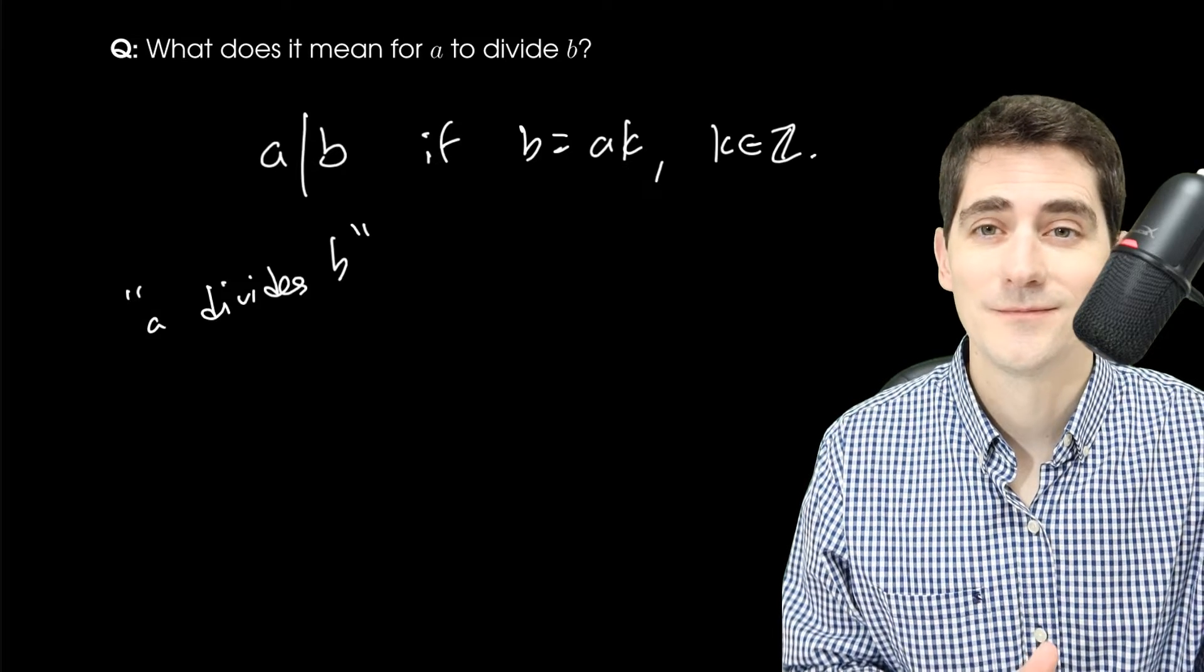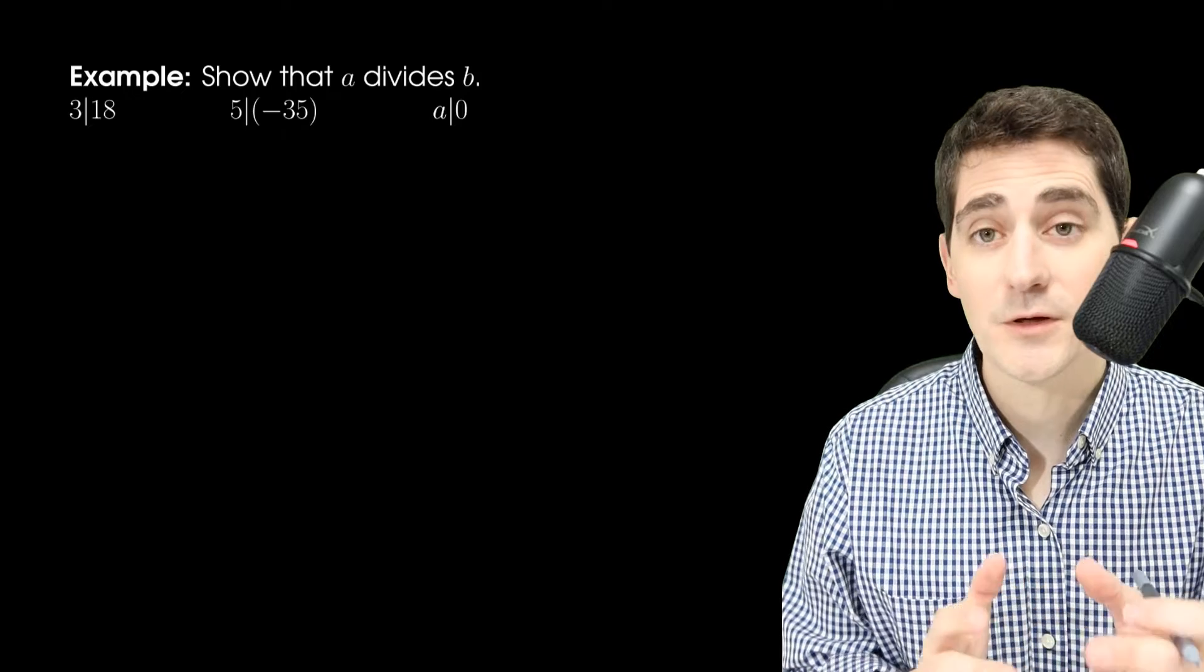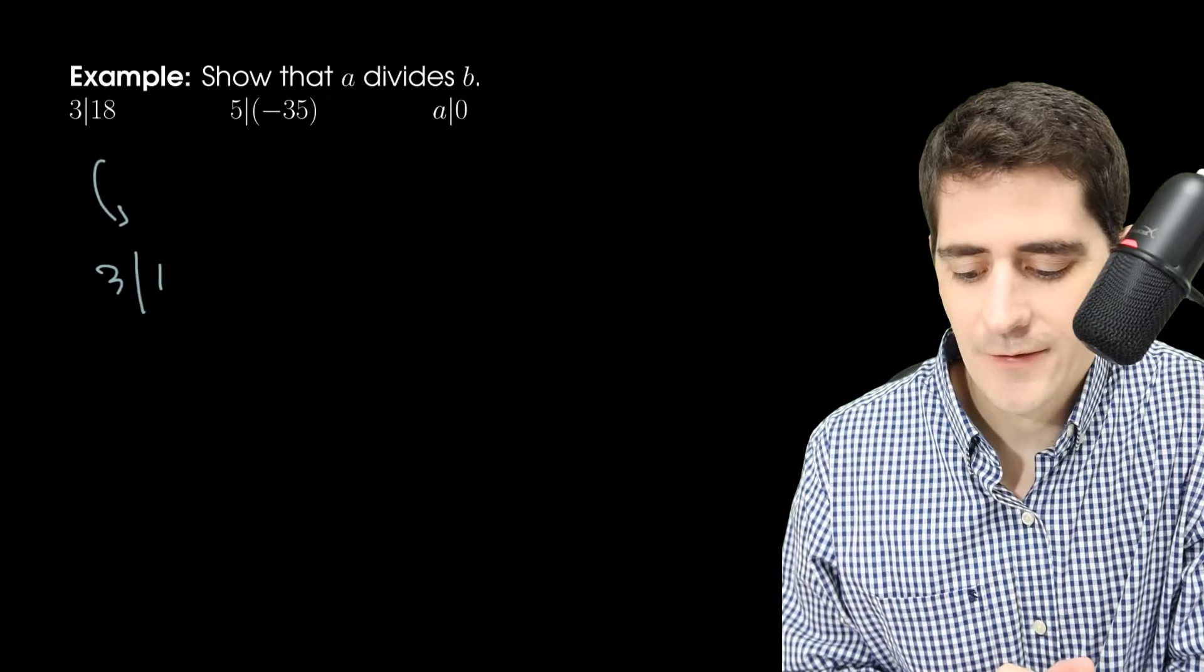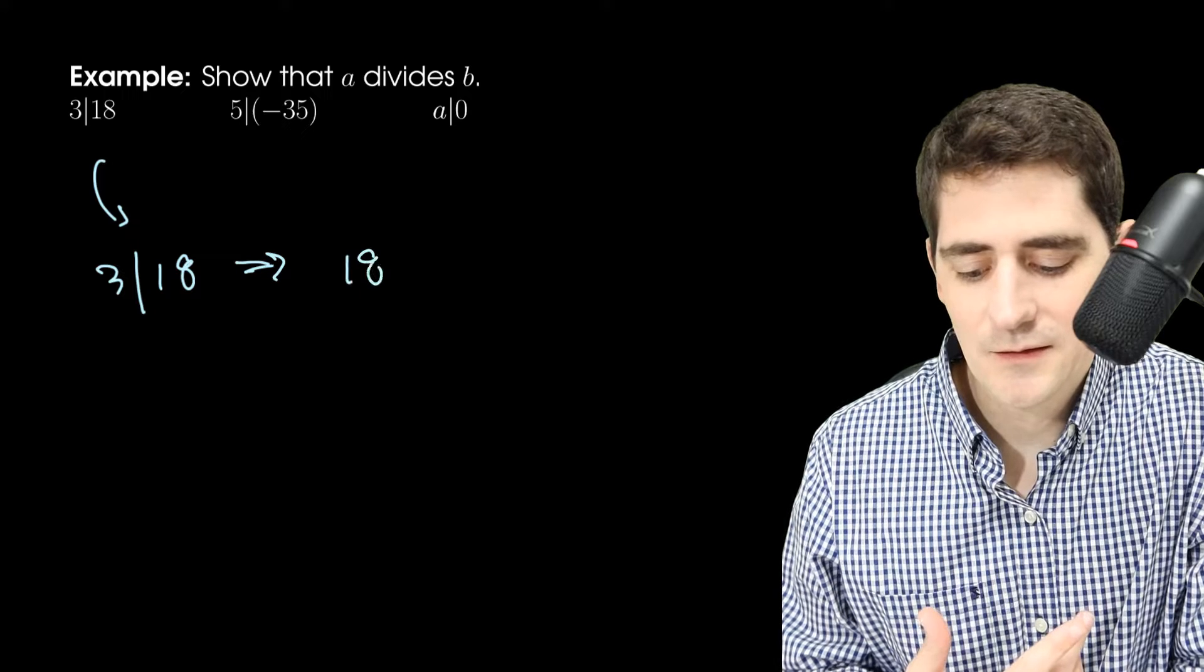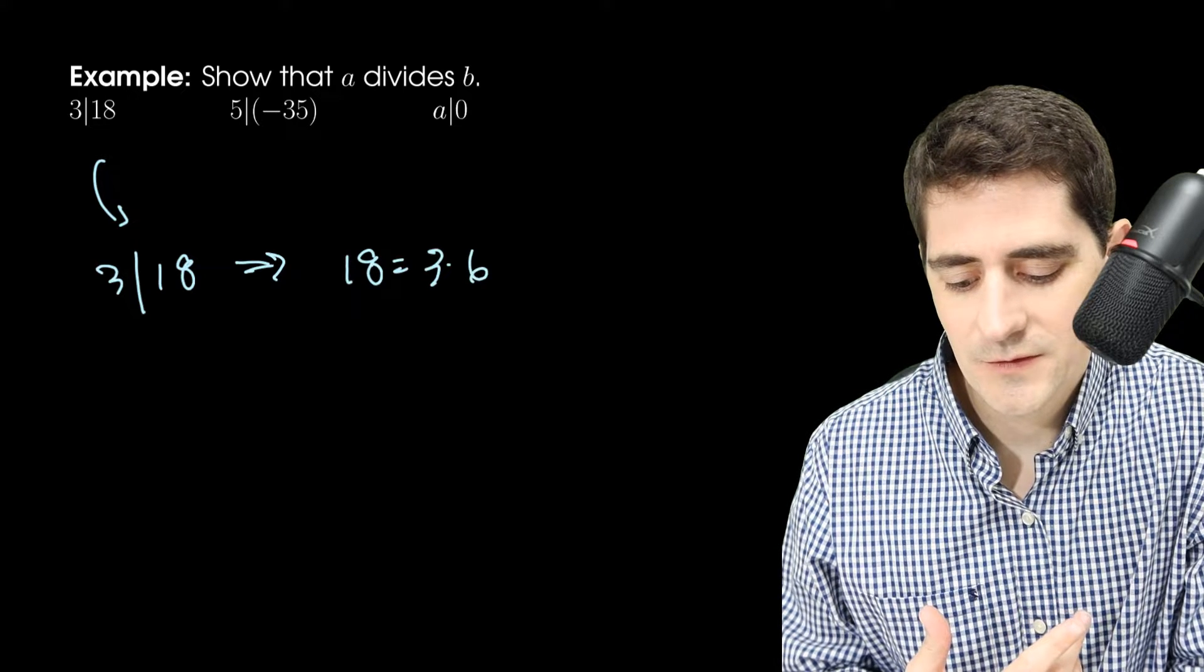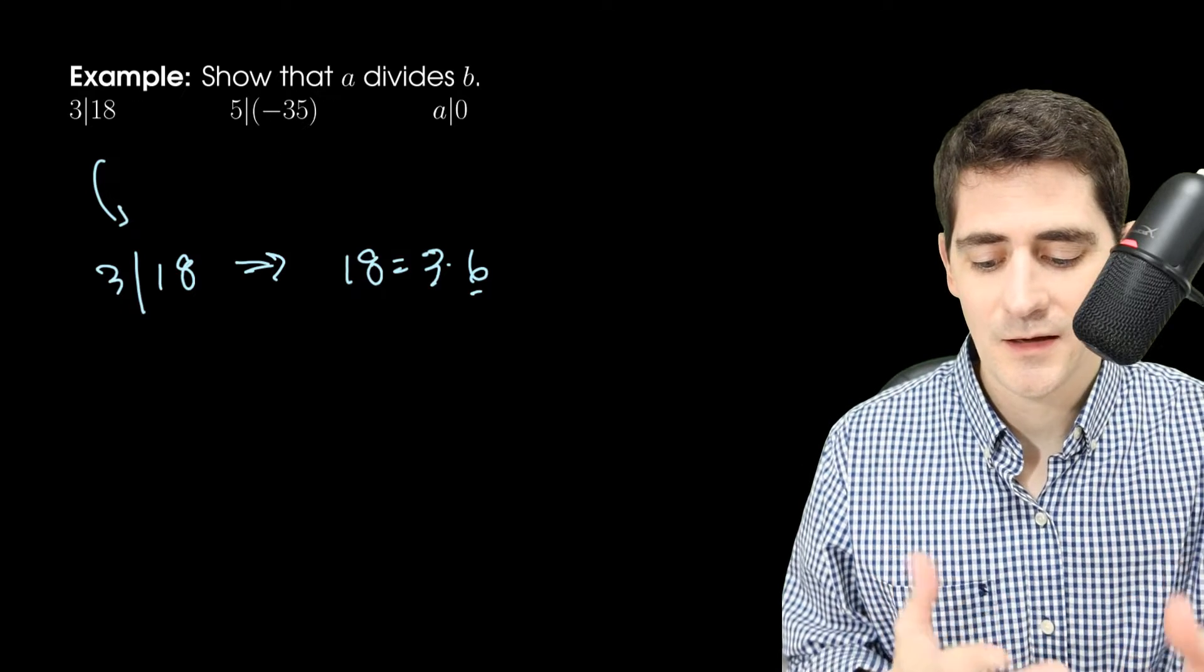So let's look at some examples. Okay, so here I have 3. I want to show that A divides B. In this case, I want to show that 3 divides 18. That's pretty easy to say because I can write 18 as 3 times some integer, 6. So there it is. 3 divides 18.